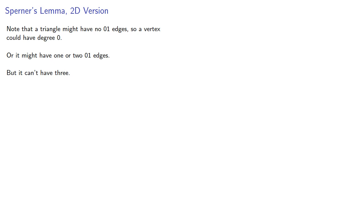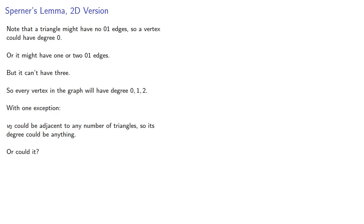So every vertex in the graph will have degrees 0, 1, or 2, with one exception. This exterior vertex, V0, could be adjacent to any number of triangles, so its degree could be anything. Or could it?